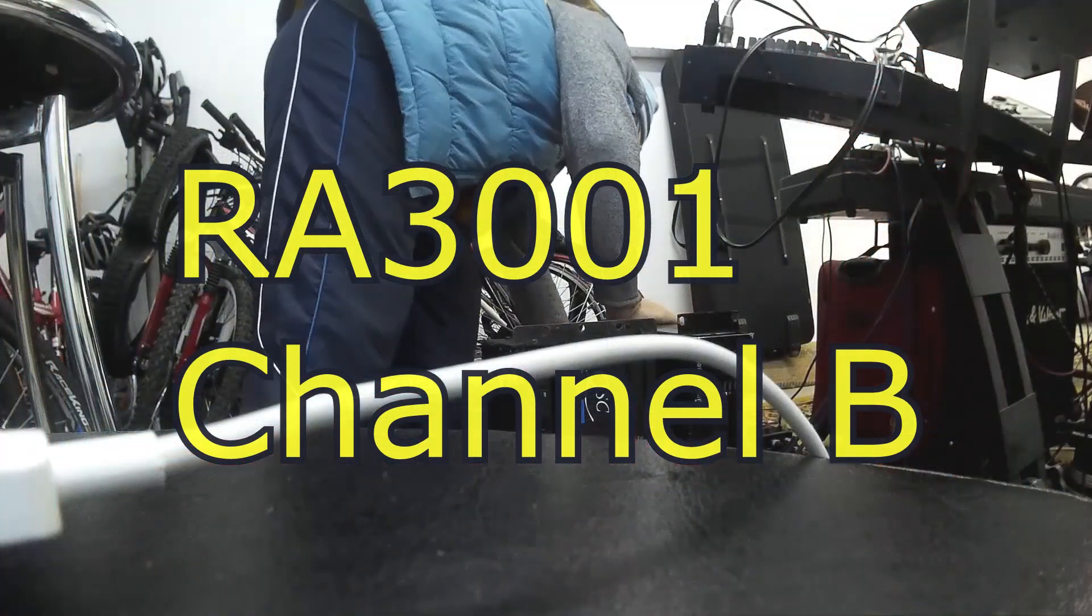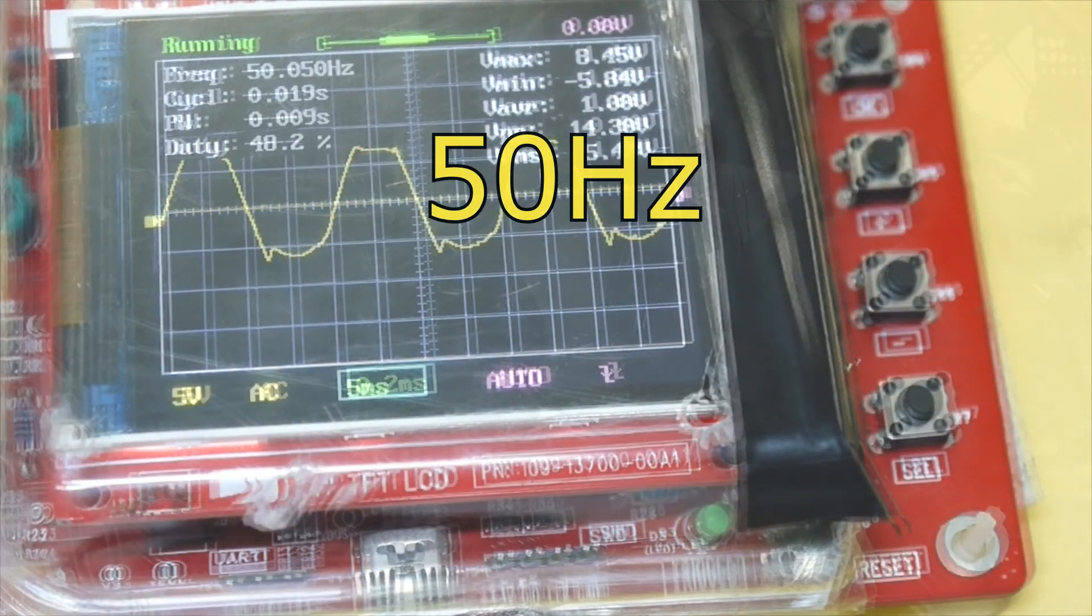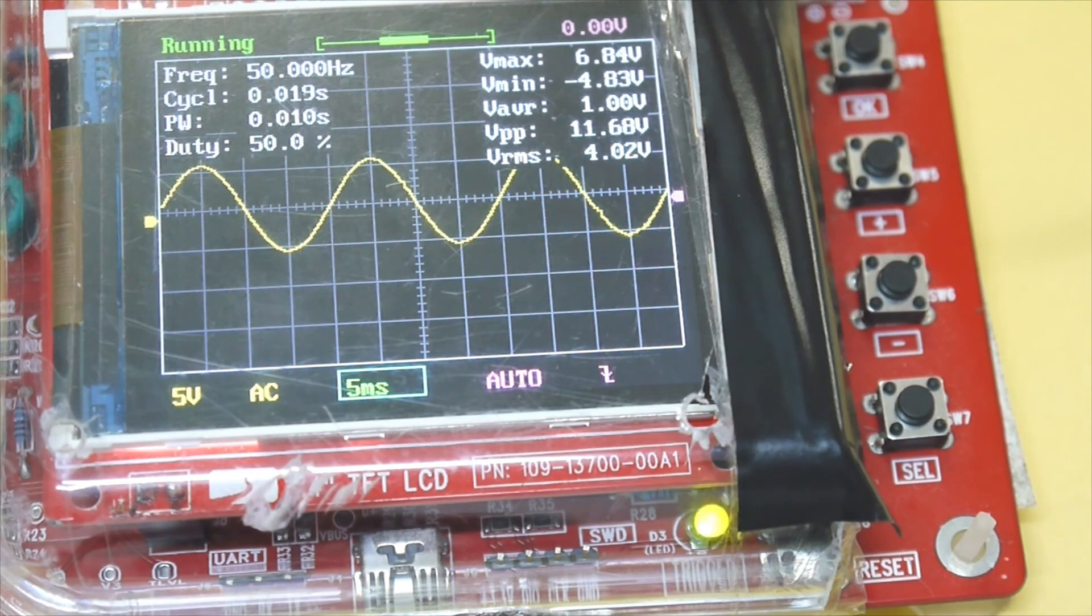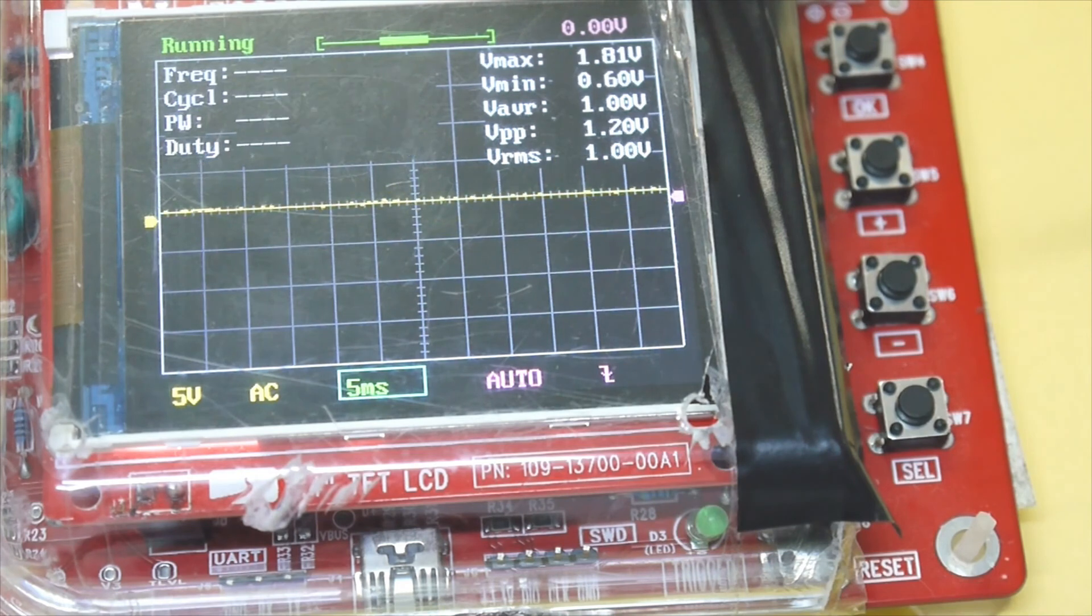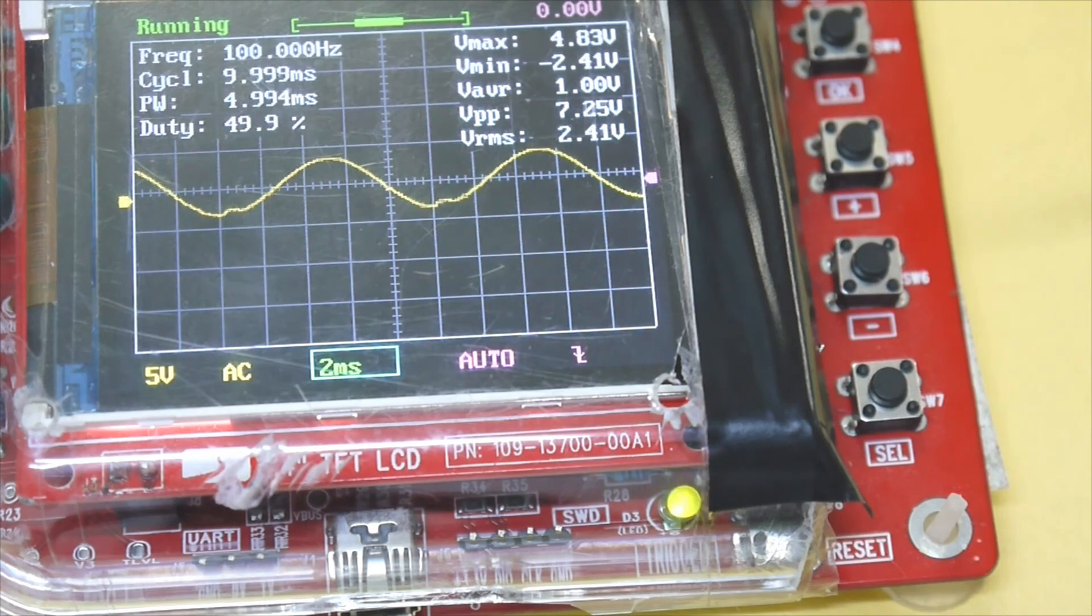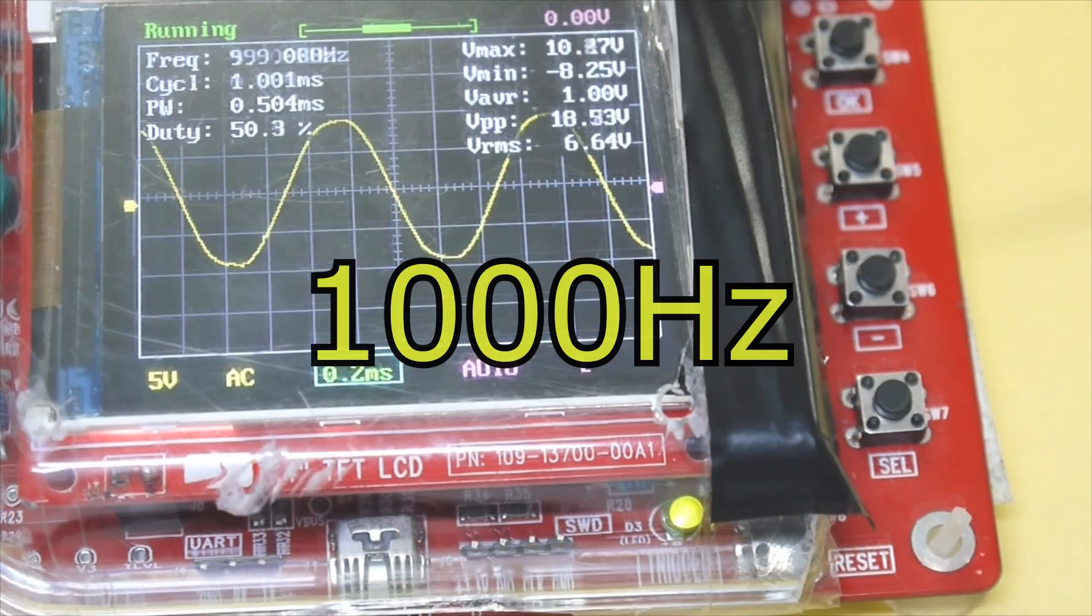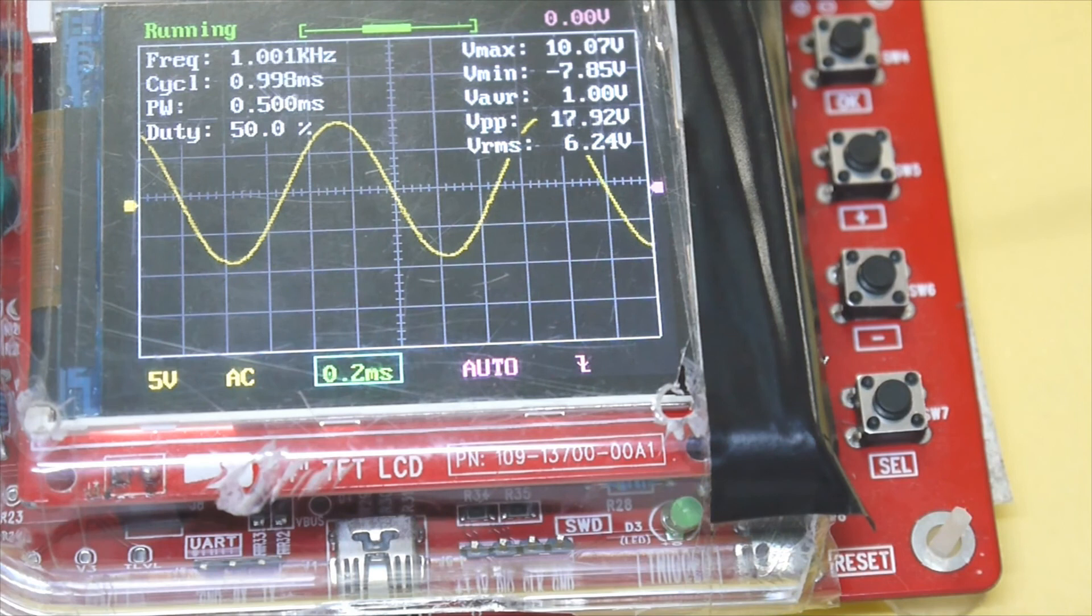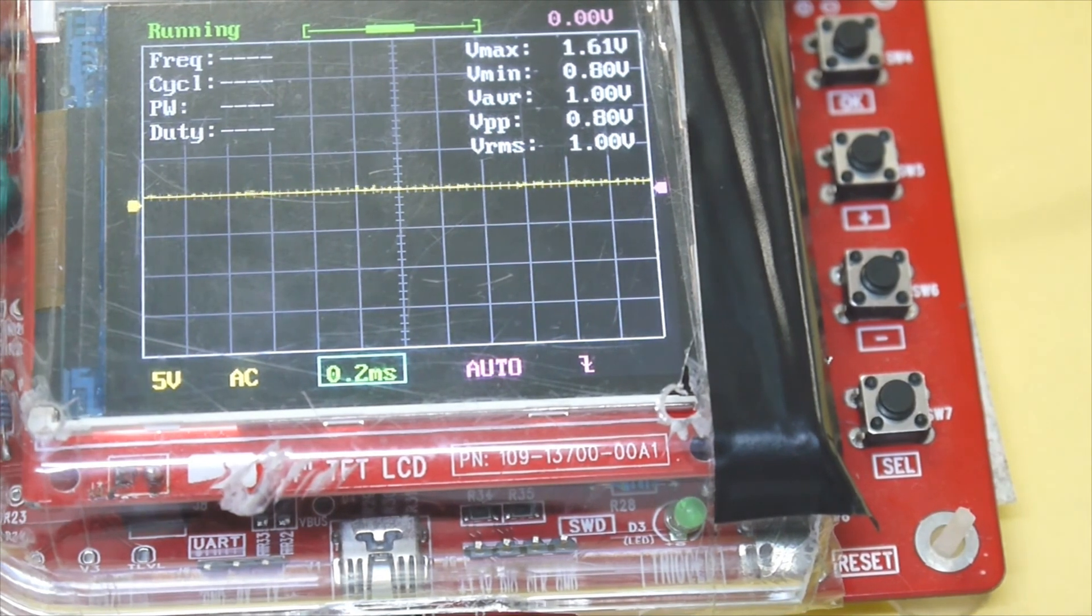Channel B, 50 Hz. That's the limit. 100 Hz. That's it. These are the tests with two power amplifiers.